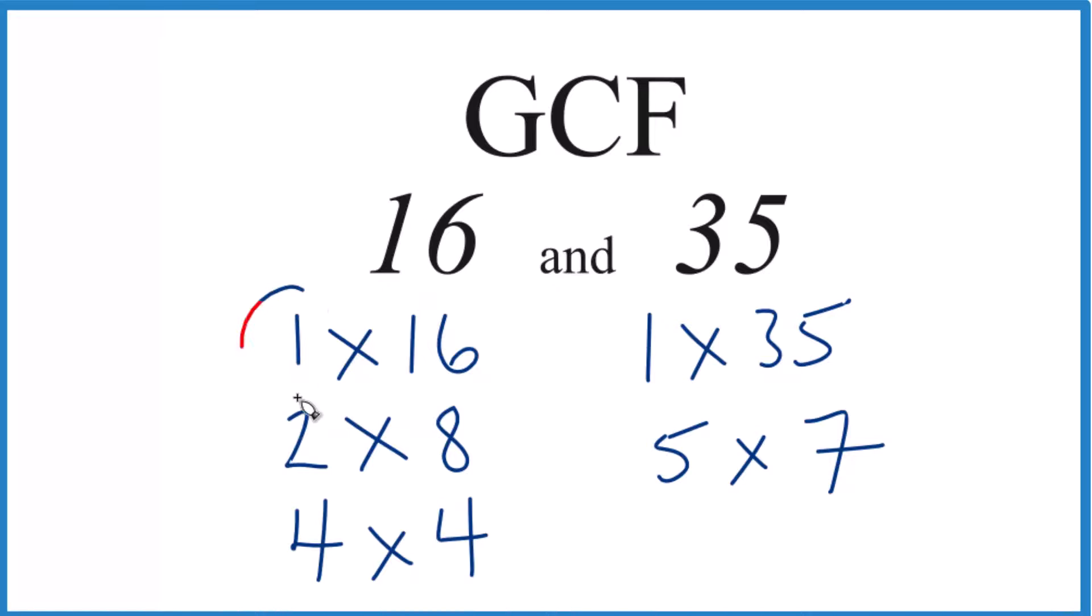Well, 1, that goes into 16 and 35 evenly. So that's a common factor and that's it. This is the greatest common factor between 16 and 35.